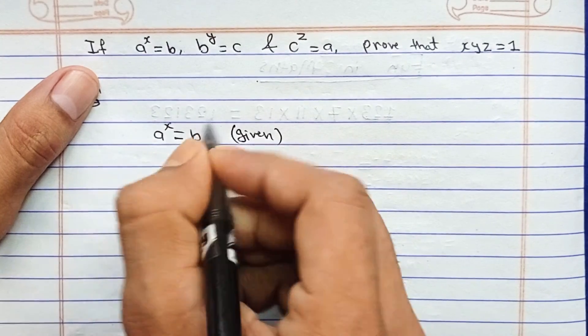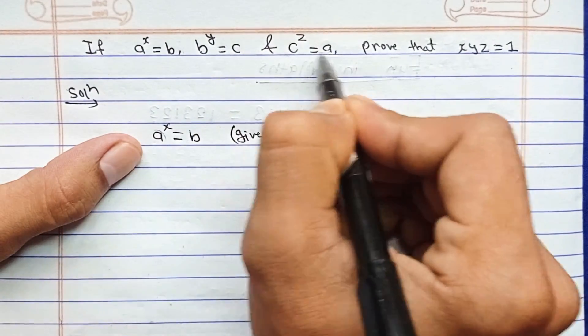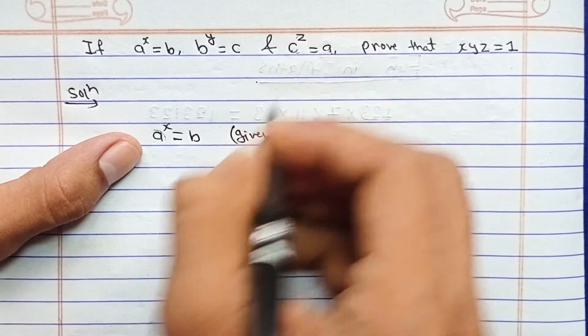And in place of a, just watch out here. In place of a, you can replace c to the power z. This is also given. In place of a only, you can replace c to the power z.